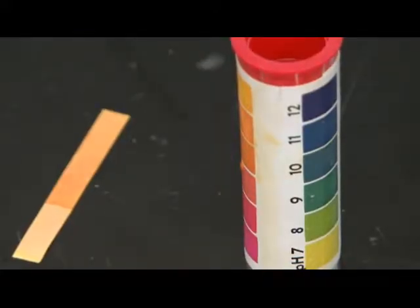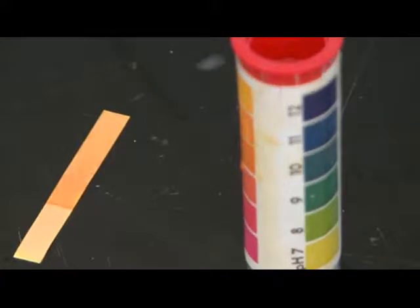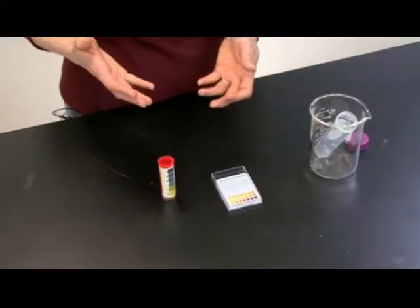A simple way to measure the pH of a sample of water is to use pH paper. pH paper can come in several forms.